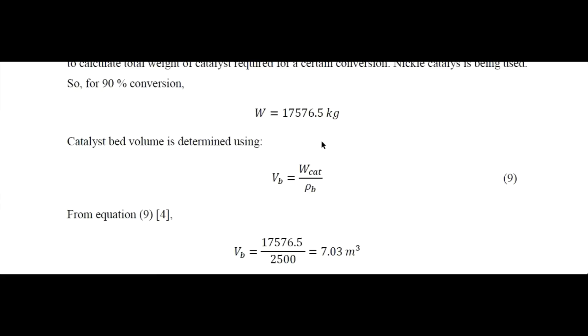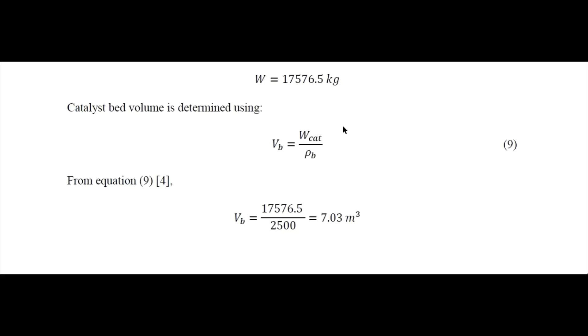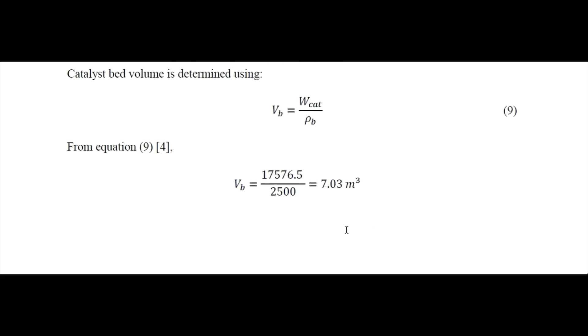So let's move here. So after we are done with the 90% conversion, we obtain the weight of the catalyst as 17,576.5 kg. So now based on the density, we can find the volume of the bed required, which we have determined here as 7.03 cubic meters.